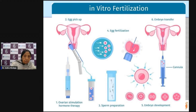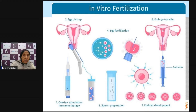Sperm is collected from the male partner and added to the eggs — when the egg and sperm meet, that is called fertilization. When the sperm is defective, the egg is not accepting the sperm, or the sperm is weak or in low numbers, we take a single sperm in a needle and inject it directly into the egg rather than allowing the sperm to enter on its own. This procedure is called intracytoplasmic sperm injection, commonly known as ICSI.